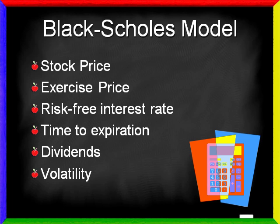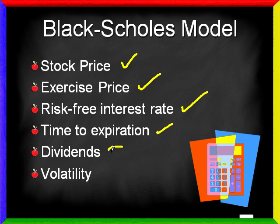The Black-Scholes model is a theoretical pricing model or calculator. While there are many option pricing models, they all generate similar results, but the Black-Scholes is the original and most well known. The Black-Scholes model asks you to enter six pieces of information: the stock price, the exercise price or strike price, risk-free rate of interest, time to expiration, if any dividends are paid over the life of the option and if so how much, and finally the volatility.